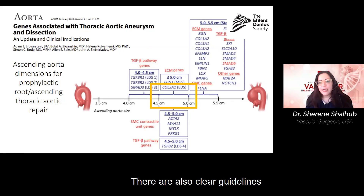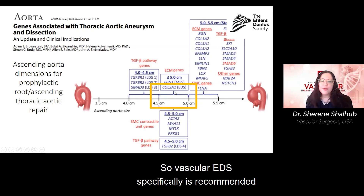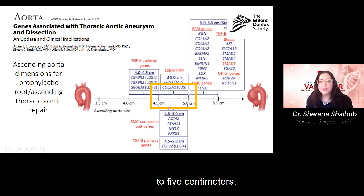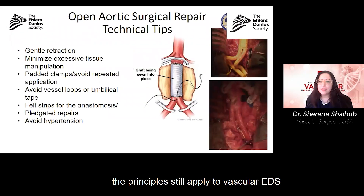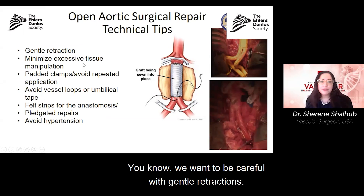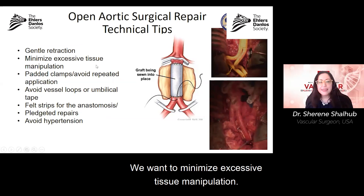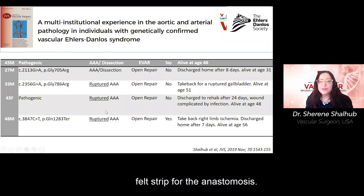There are also clear guidelines for ascending aortic or aortic root aneurysms. For vascular EDS specifically, repair is recommended at four and a half to five centimeters. For open surgical repair, the principles still apply to vascular EDS with slight modifications: gentle retractions, minimizing excessive tissue manipulation, using padded clamps, and using felt strips for the anastomosis.